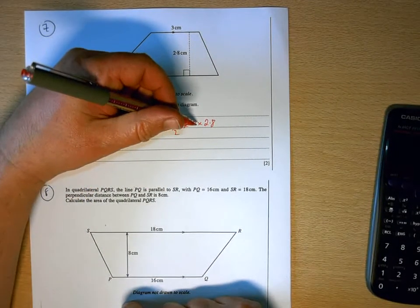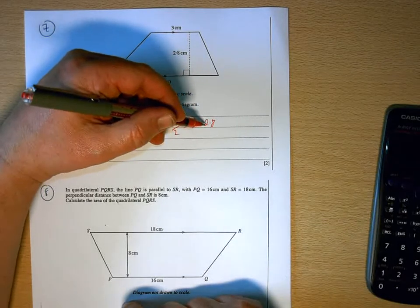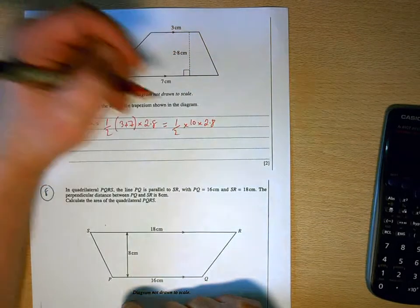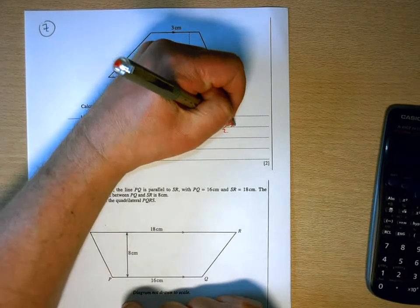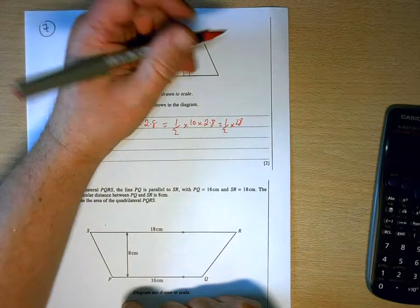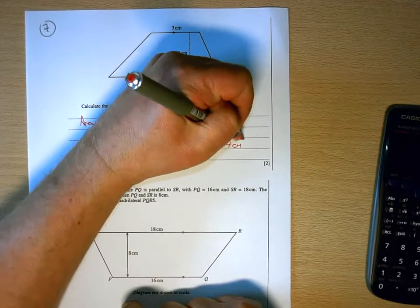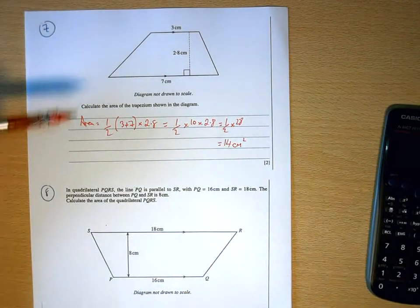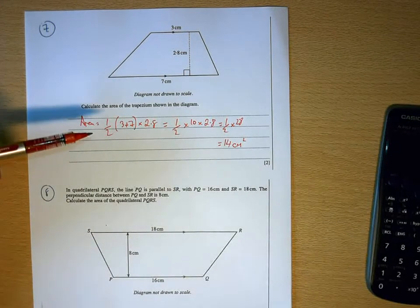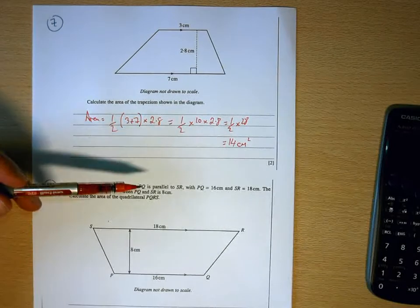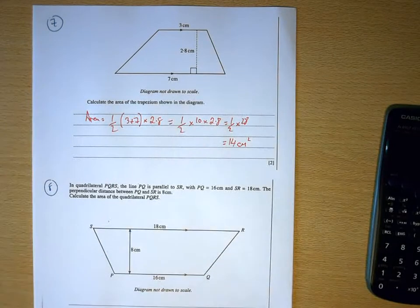So, half times 10 times 2.8. When you're multiplying by 10, that's going to move that one way, one space to the left of the decimal point. So we get a half times 28, which is 14 centimetres squared. So these could come up on the non-calculator paper. So you need to make sure that you don't rely completely on using a calculator to answer these questions.